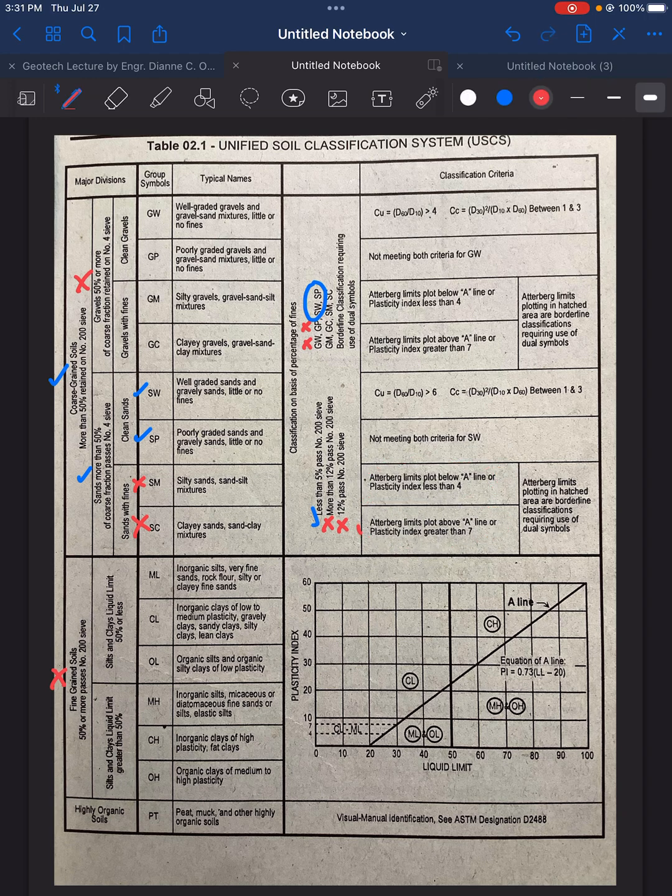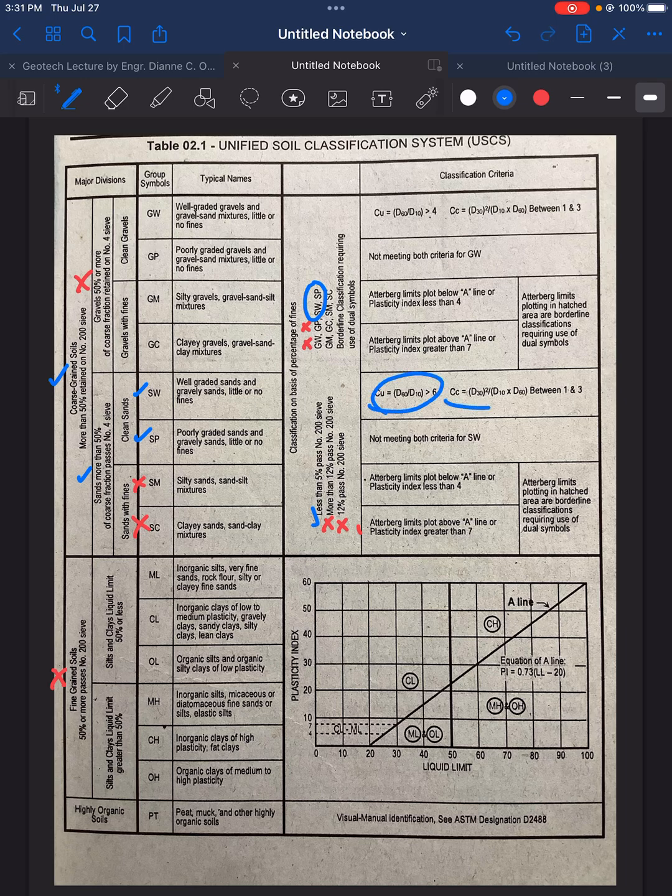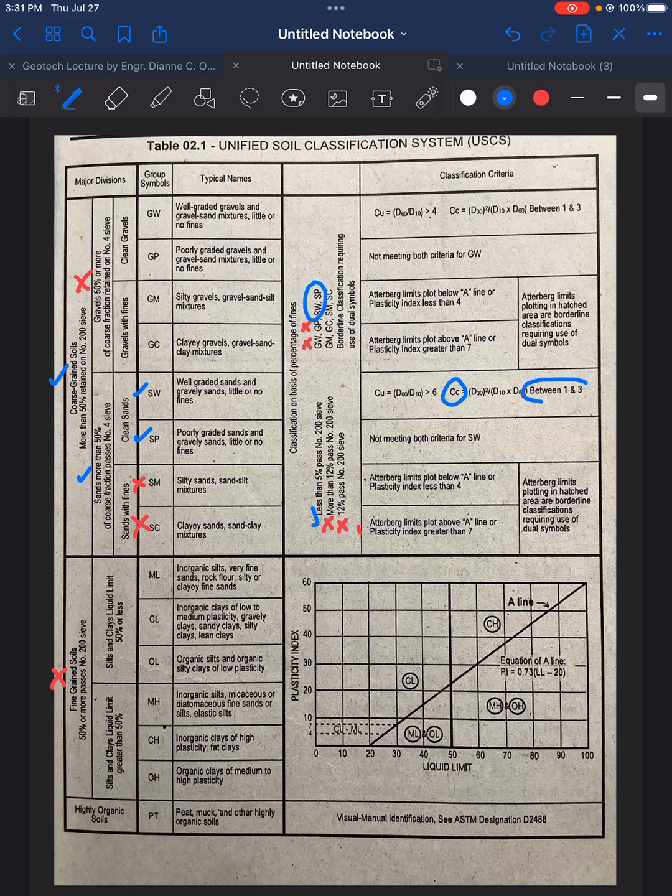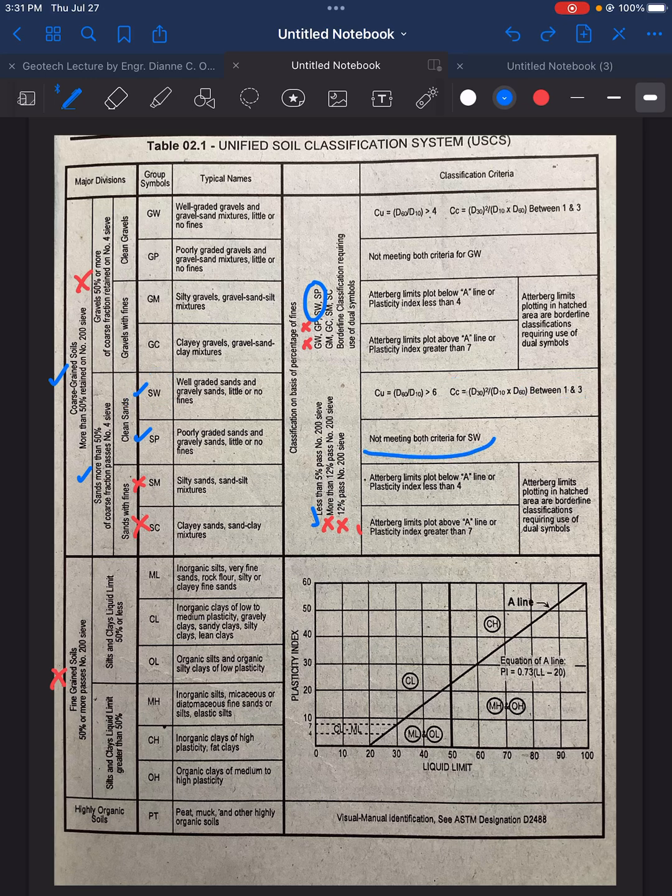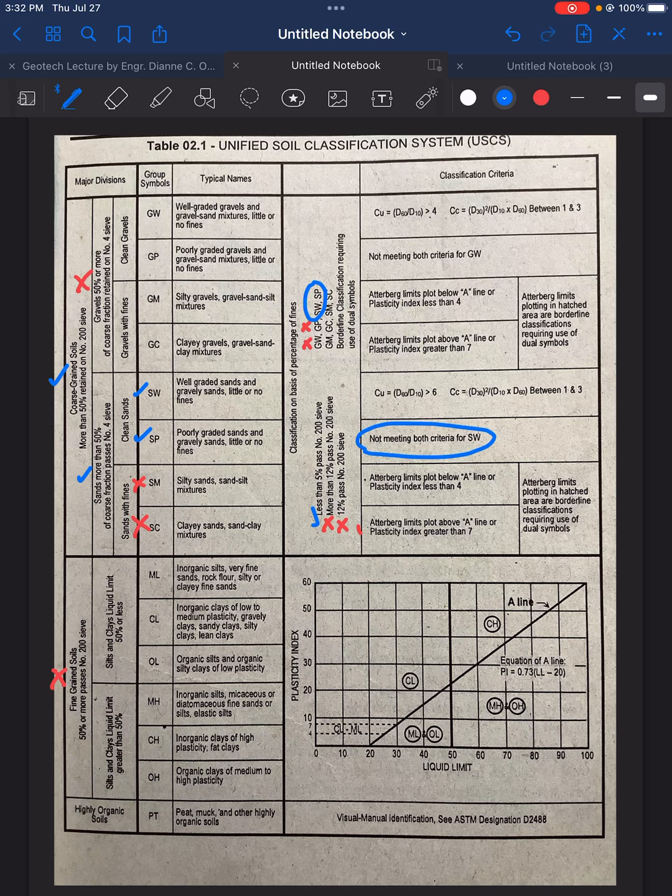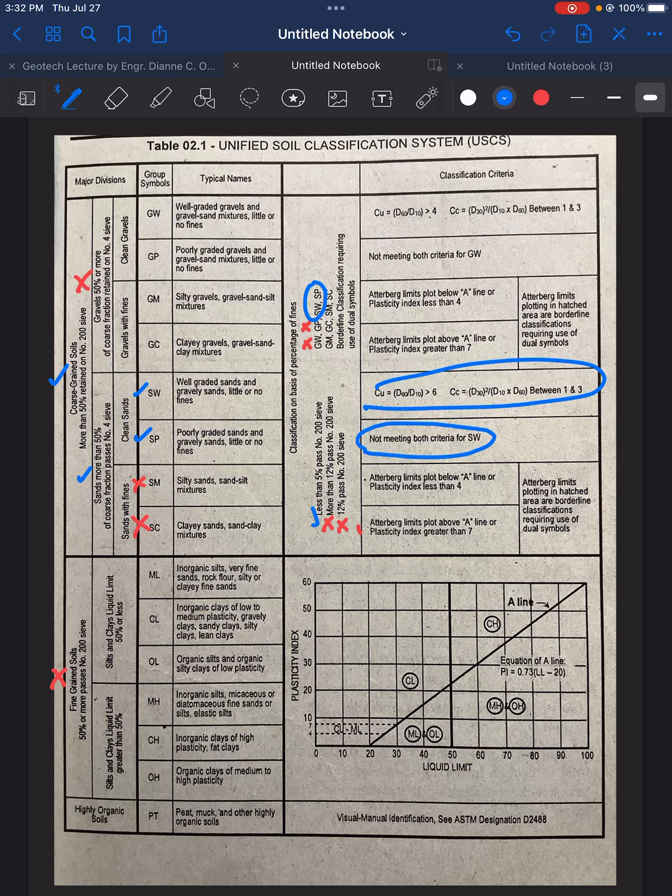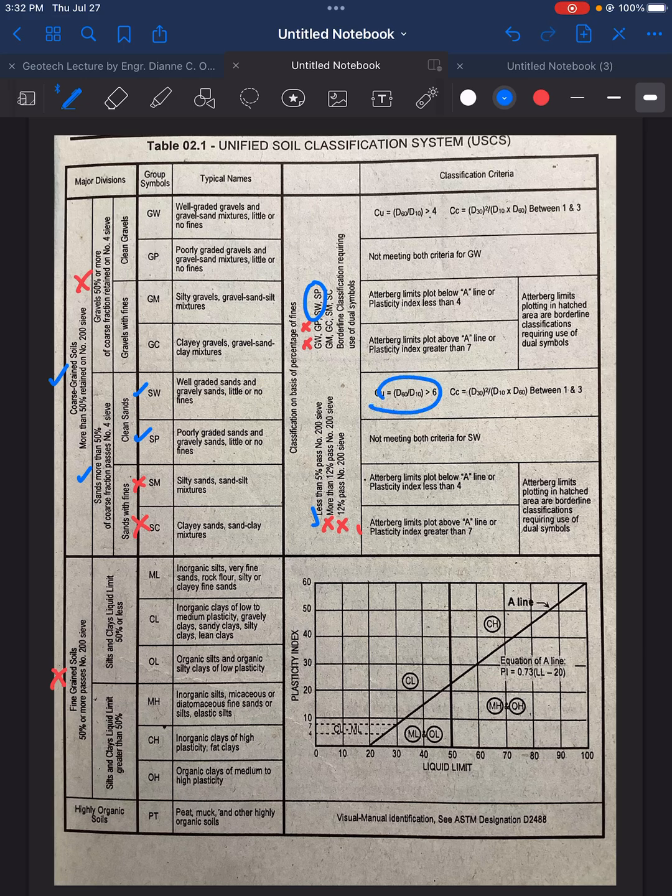How do we know which between this is the classification? We're going to see the value for CU and CC. For the value of CU, if it is greater than 6 and if the CC is in between 1 and 3, therefore, it is an SW classification. But if it does not meet both the criteria for this above here, therefore, it becomes an SP. We need to solve for CU and CC.